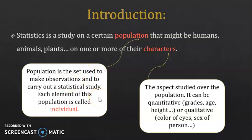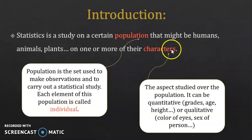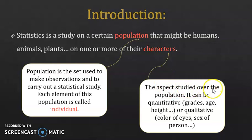So, if you're making a study, the set that you're making the study on is called the population, while each element of this population is called an individual. Now, what are characters? Characters is the aspect studied over the population.